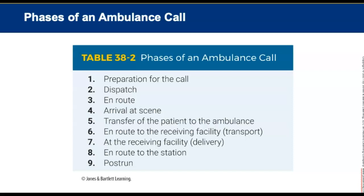An ambulance call has nine different phases. The first phase is preparation. Second is dispatch. Third is en route. Fourth is arrival at the scene. Fifth is the transfer of the patient. Sixth is en route to the receiving facility, also called transport. Then you arrive at the receiving facility and deliver the patient, followed by en route to the station, and finally post-run.